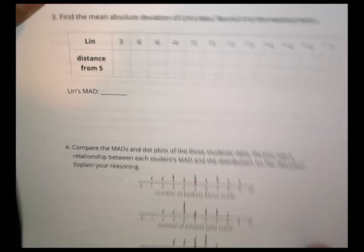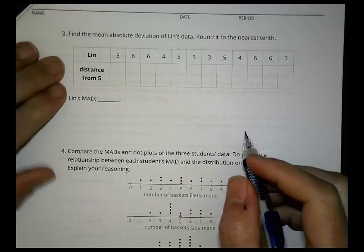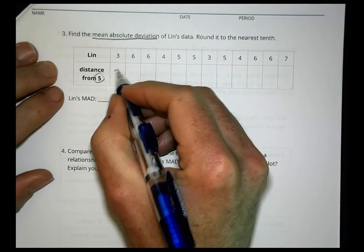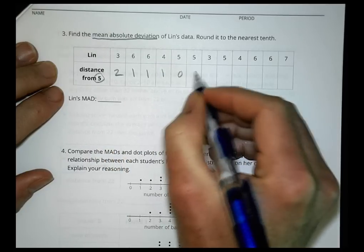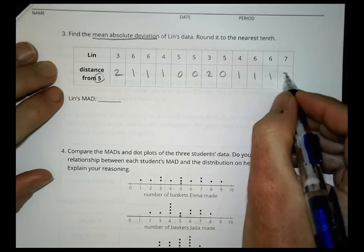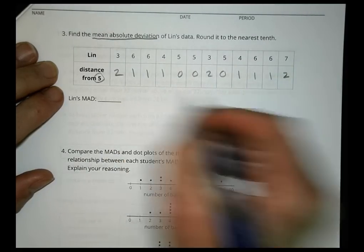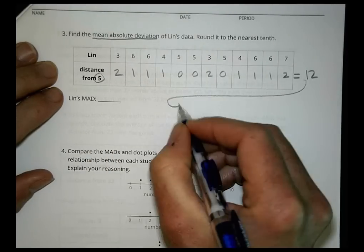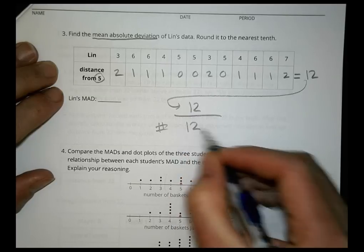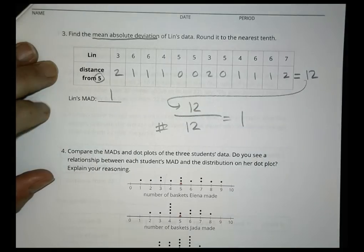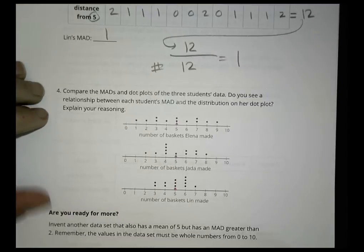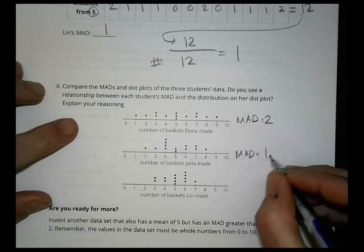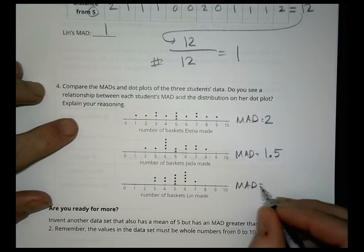Let's find Lynn's mean absolute deviation. We liked Lynn — she was the most consistent player. Finding her distances from 5: 2, 1, 1, 1, 0, 0, 2, 0, 1, 1, 1, 2. Already I can see lots of zeros and ones. When you add all this up, you get 12. We divide 12 by 12 and get 1. So Lynn's mean absolute deviation is 1. Comparing: Elena's MAD is 2, Jada's is 1.5, and Lynn's is 1.